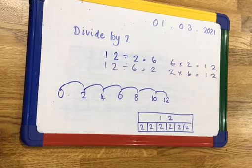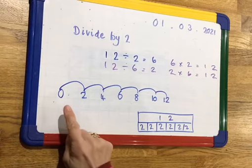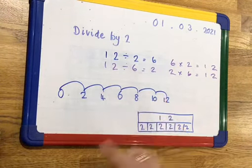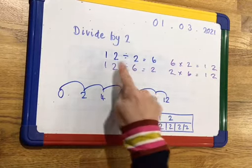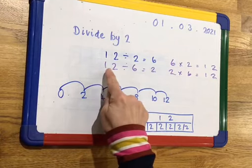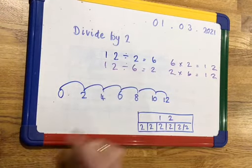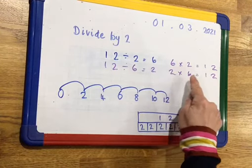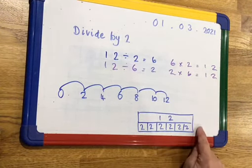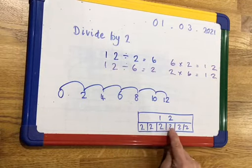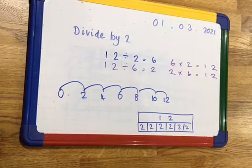So hopefully children, you've got the same result as me. I've drawn my number line and I've made 1, 2, 3, 4, 5, 6 jumps — that means 12 divided by 2 is 6. I could also write it the opposite way as 12 divided by 6 is 2. If 12 divided by 2 is 6, then 6 lots of 2 must be 12 and 2 lots of 6 must be 12. Here's my bar model: I've got 6 lots of 2 in 12, so I've drawn 6 parts at the bottom with the whole being 12.